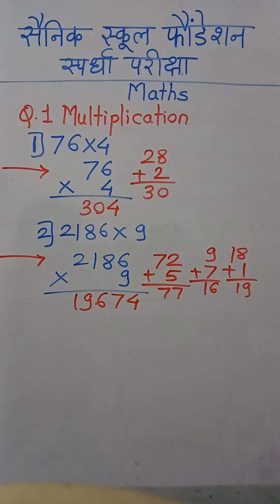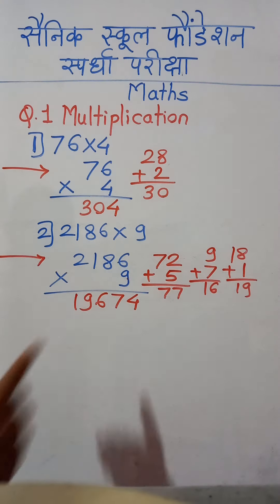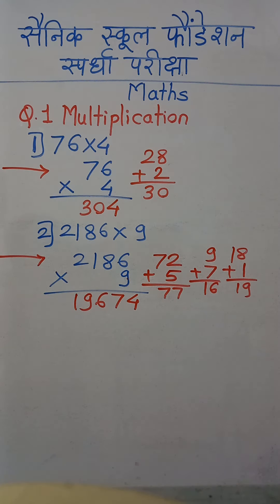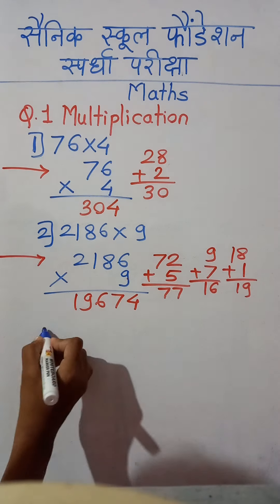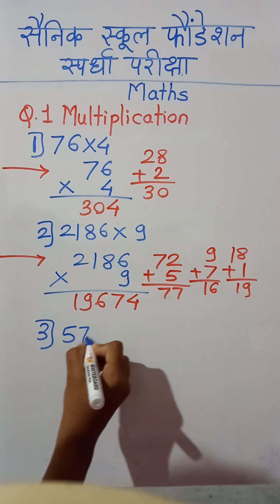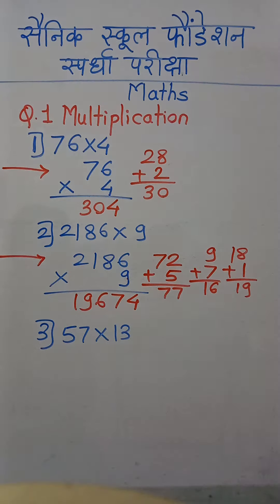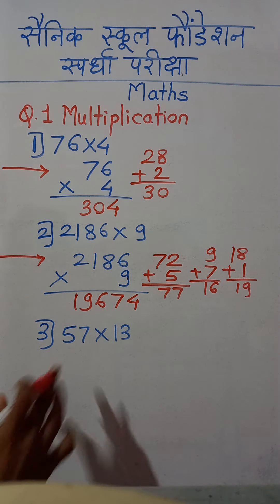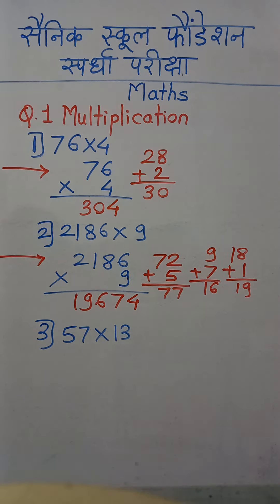So this was about when we have any digit number multiplied by a 1-digit number. Now let us see how we can calculate the multiplication of any digit number by a 2-digit number. Suppose you have been given the example 57 multiplied by 13.